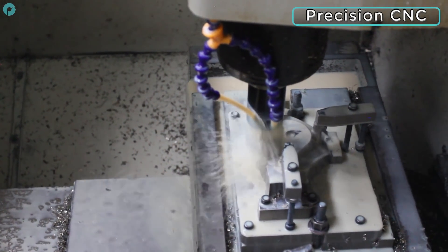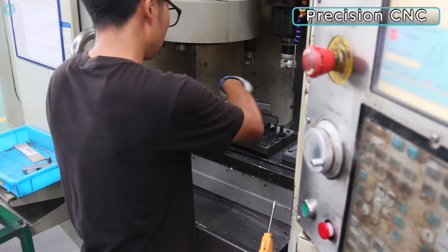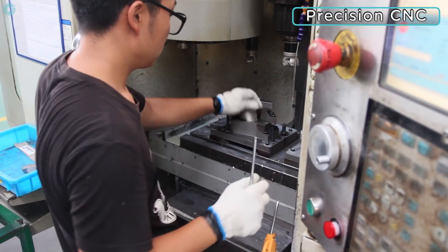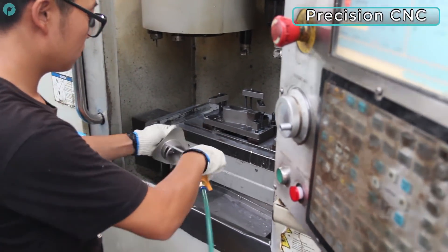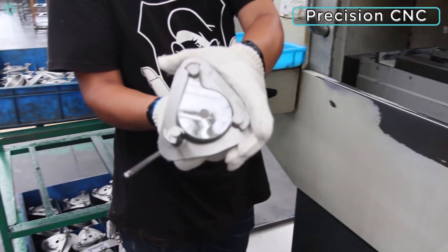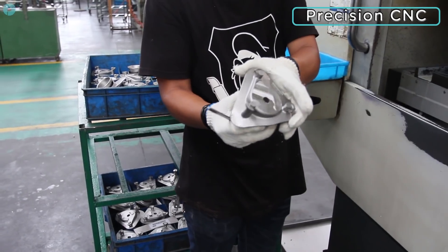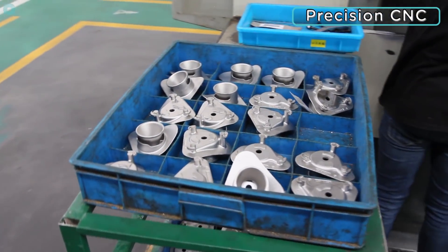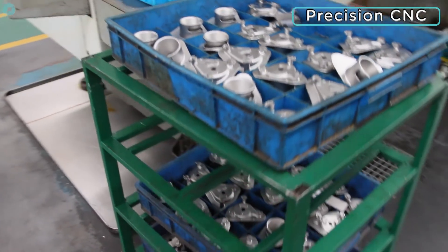Using Polycast to create casting patterns greatly reduces the time between CAD and metal parts, allowing quicker iterations on working prototypes. Polycast also completely removes any need for tooling, which is time-consuming and requires large volumes of parts to become economically viable.